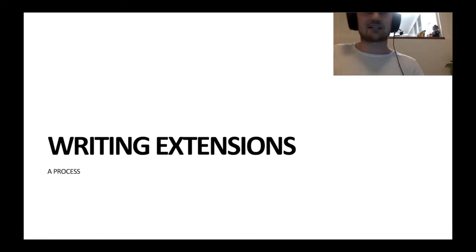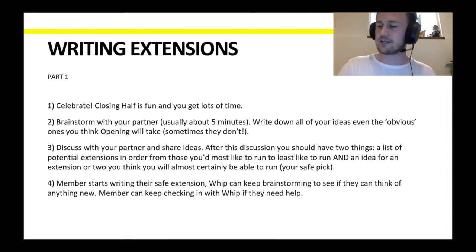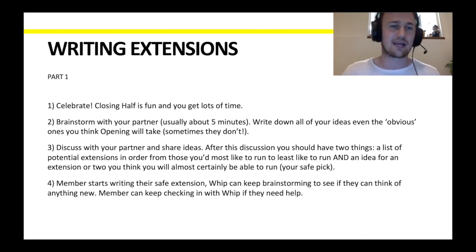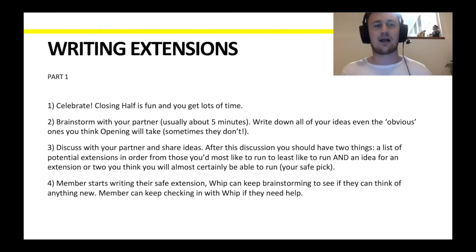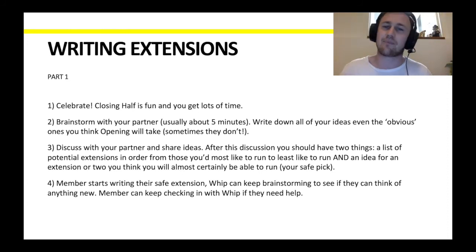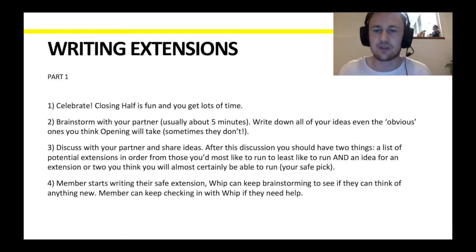This is the last part of the presentation. I want to run you through a process of how you might actually write an extension. First step: celebrate. Closing half is really fun — you get a lot more time, the benefit of thinking laterally, and it's a lot less stress than being Prime Minister speaking in 15 minutes. Now the actual steps. Second step: brainstorm with your partner. Take about five minutes, perhaps silently brainstorming, and write down all of your ideas — even the obvious ones you think your opening will take, because sometimes they don't, and then you definitely want to run them.